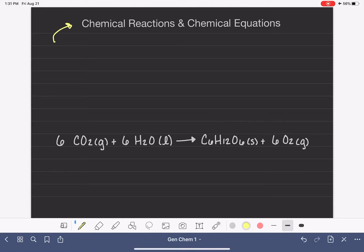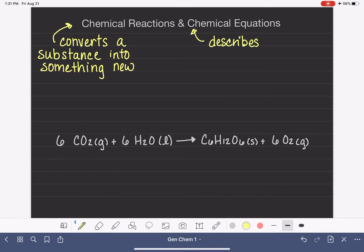A chemical reaction is a process in which one or more substances are converted into something new. And a chemical equation is simply a symbolic written description of a chemical reaction.